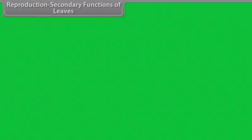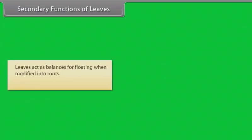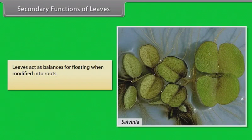Reproduction: Leaves help the plants in vegetative multiplication. Example: Bryophyllum. Leaves act as balances for floating when modified into roots. Example: Salvinia.